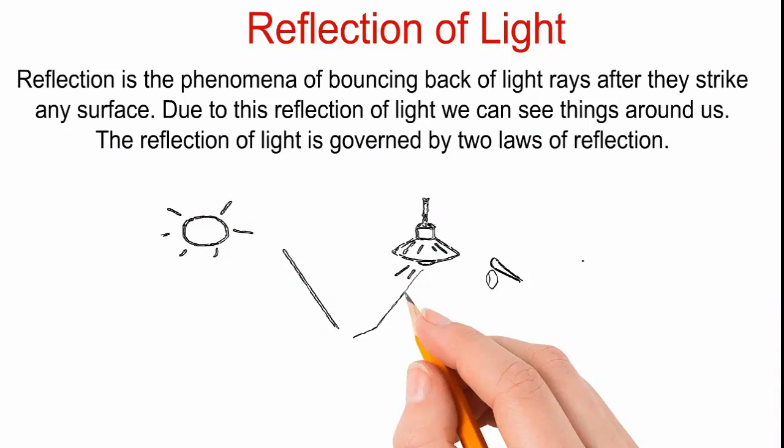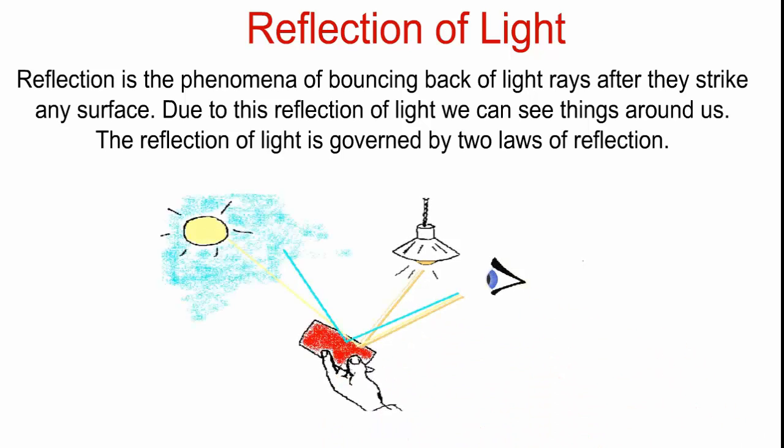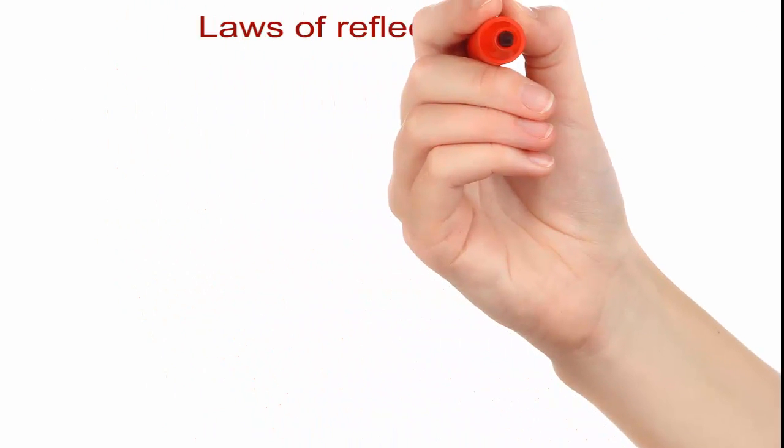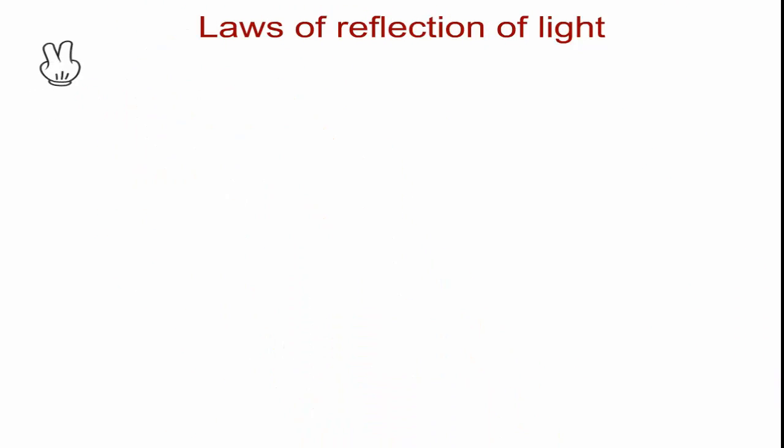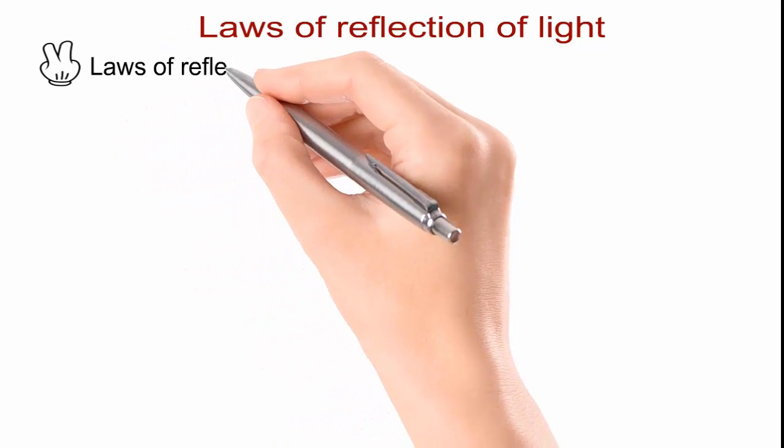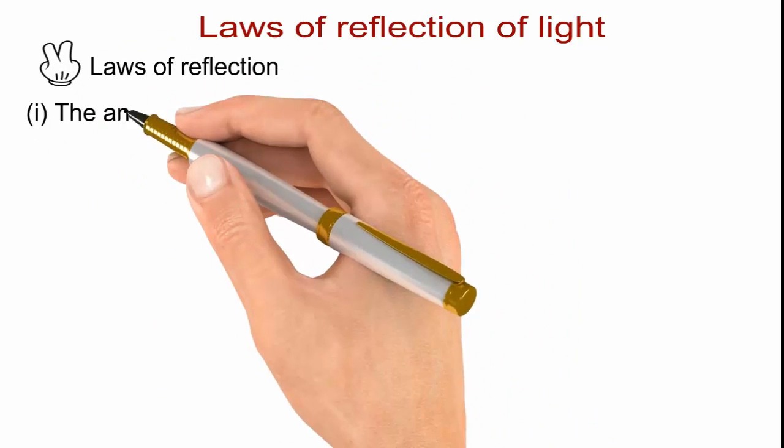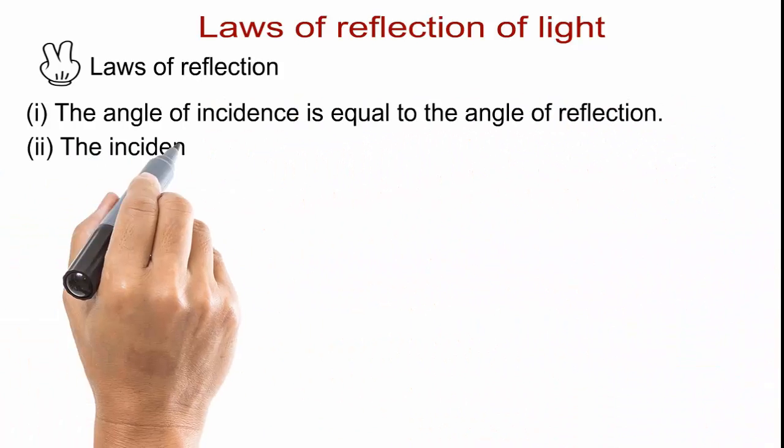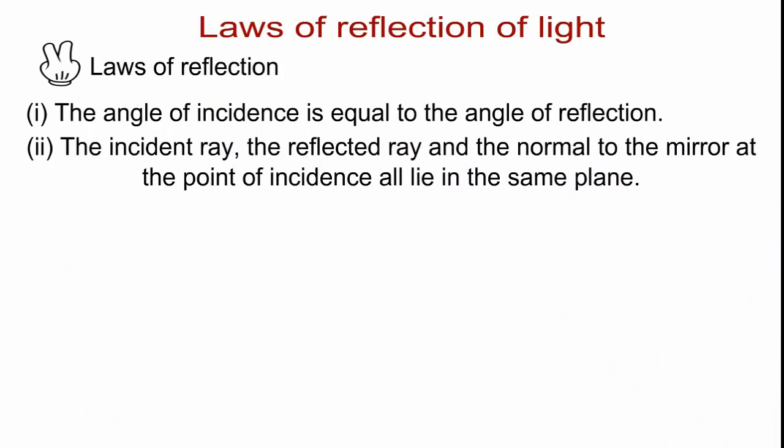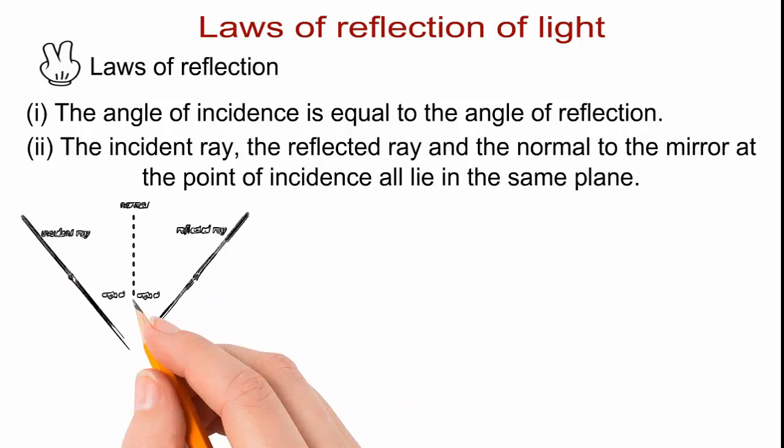Reflection of light is governed by two laws of reflection. First law, the angle of incidence is equal to angle of reflection. Second law, the incident ray, the normal, and the reflected ray all lie in the same plane.